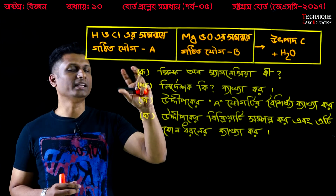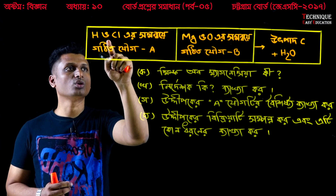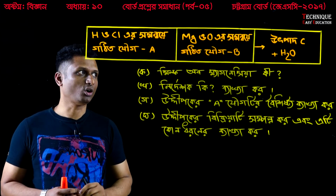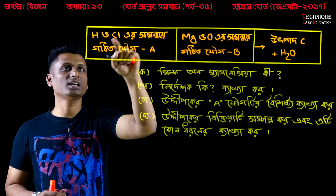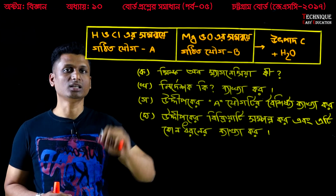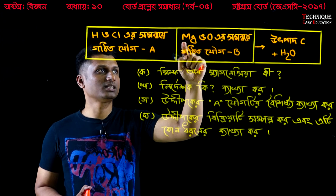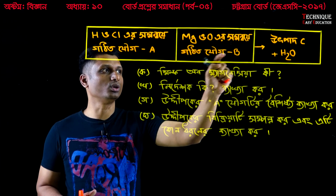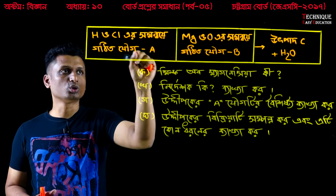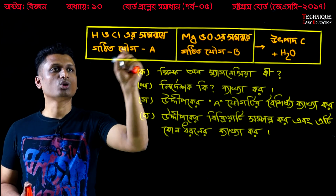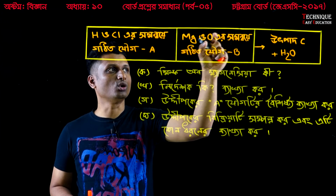This is hydrogen and chlorine. And how can we say this? This is hydrogen and chlorine. This is magnesium and oxygen. The first is hydrogen and chlorine, which is the same as magnesium and oxygen.